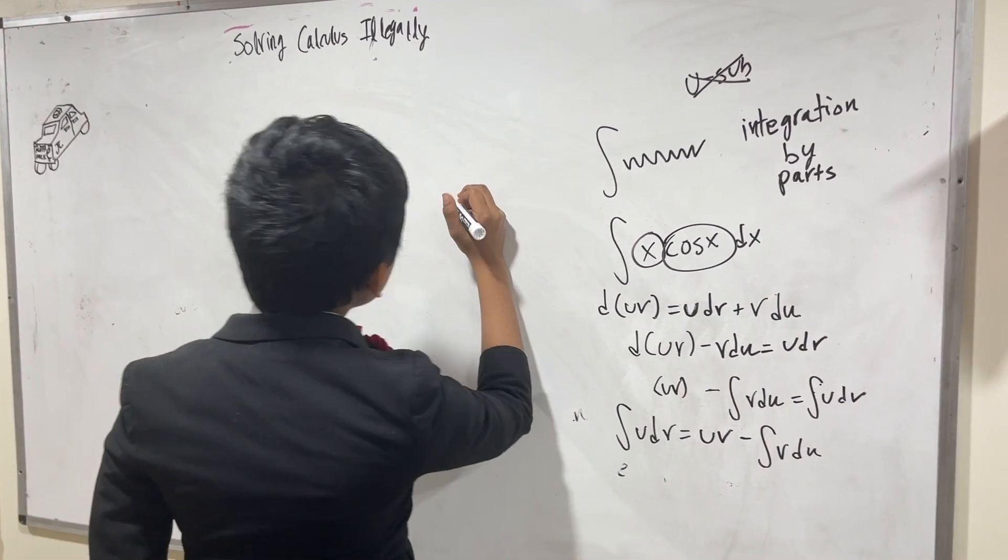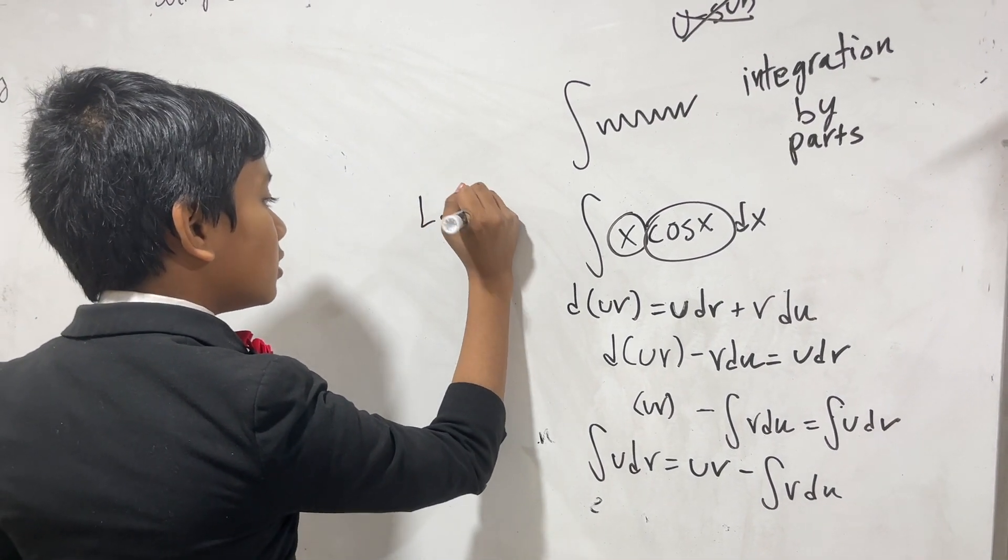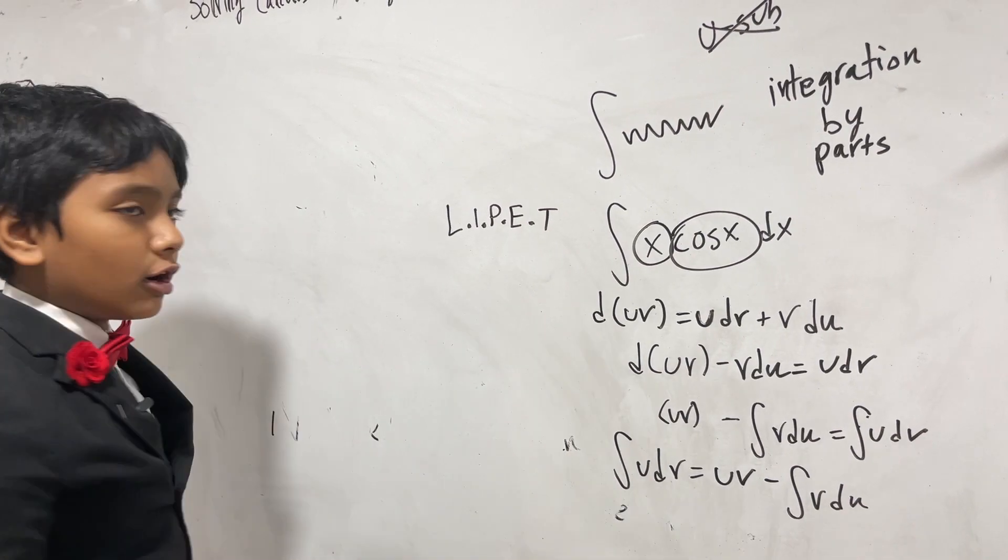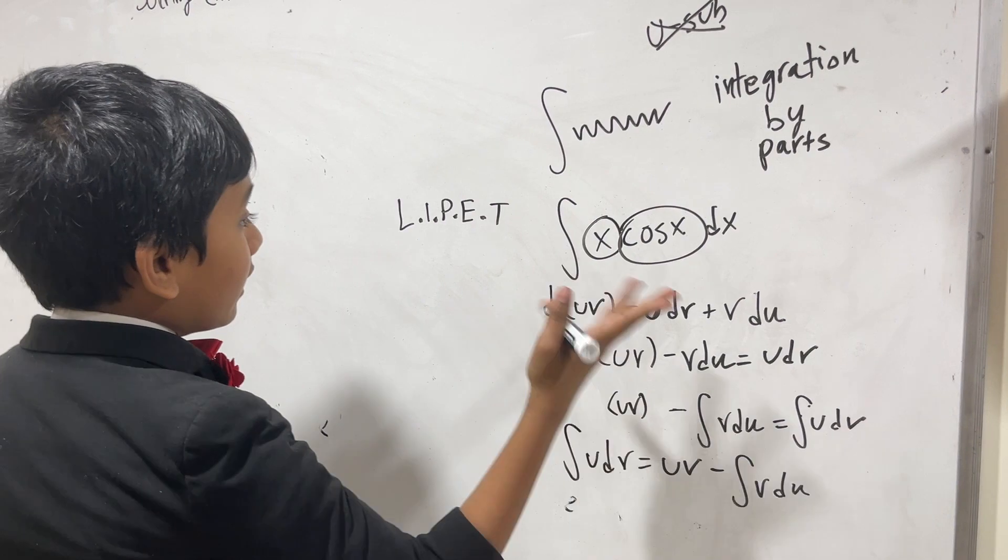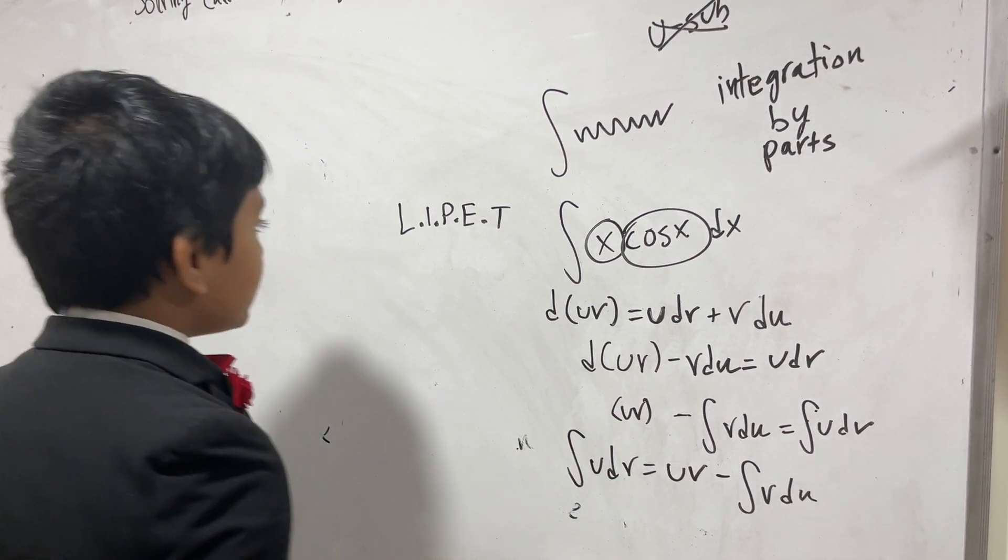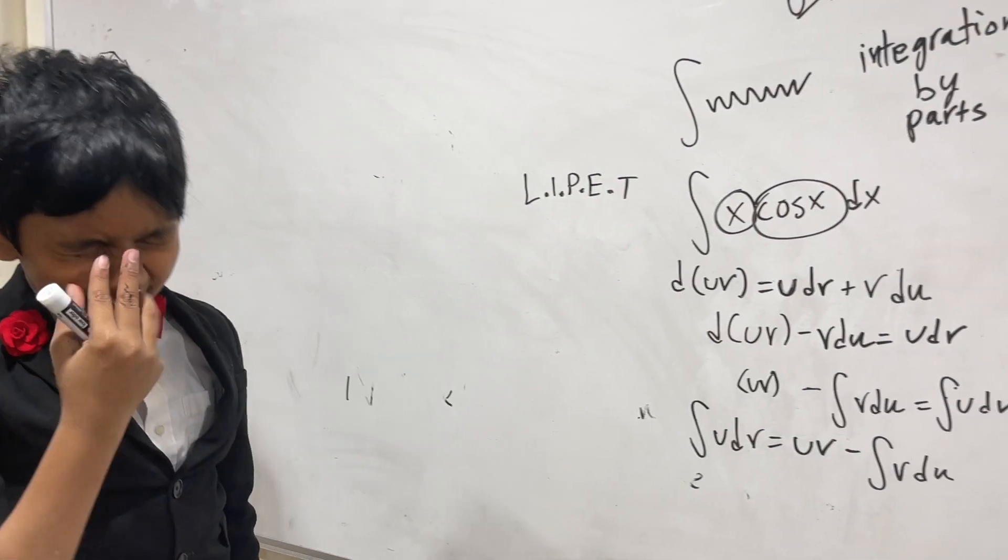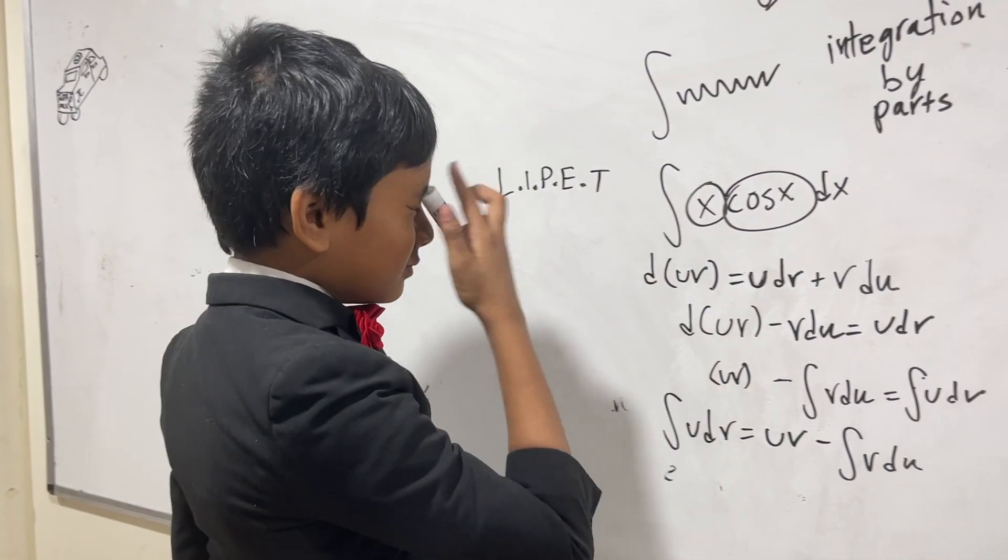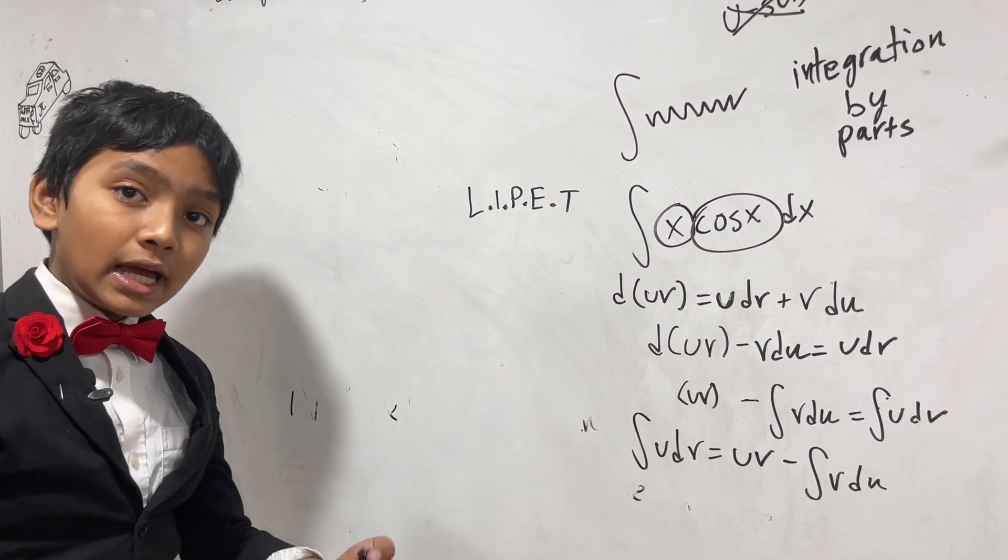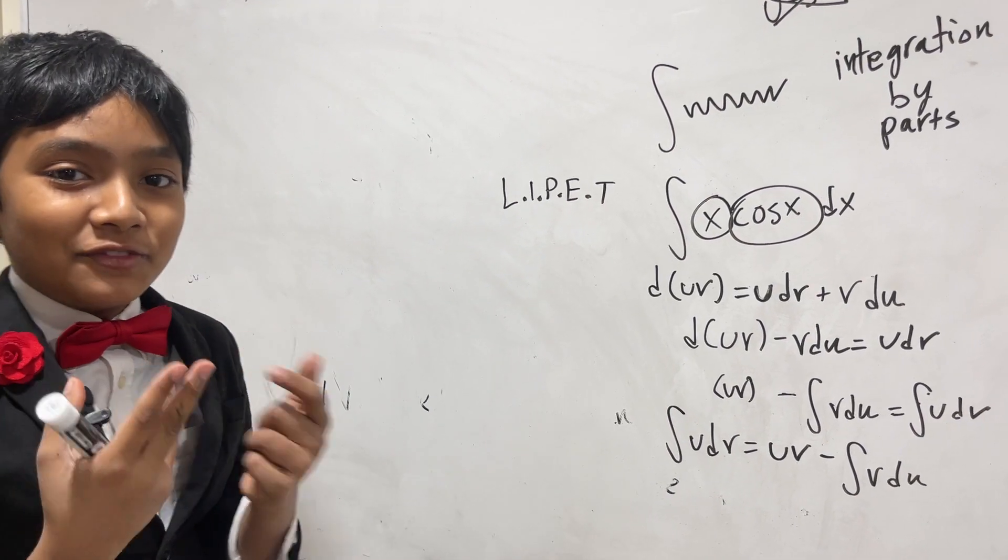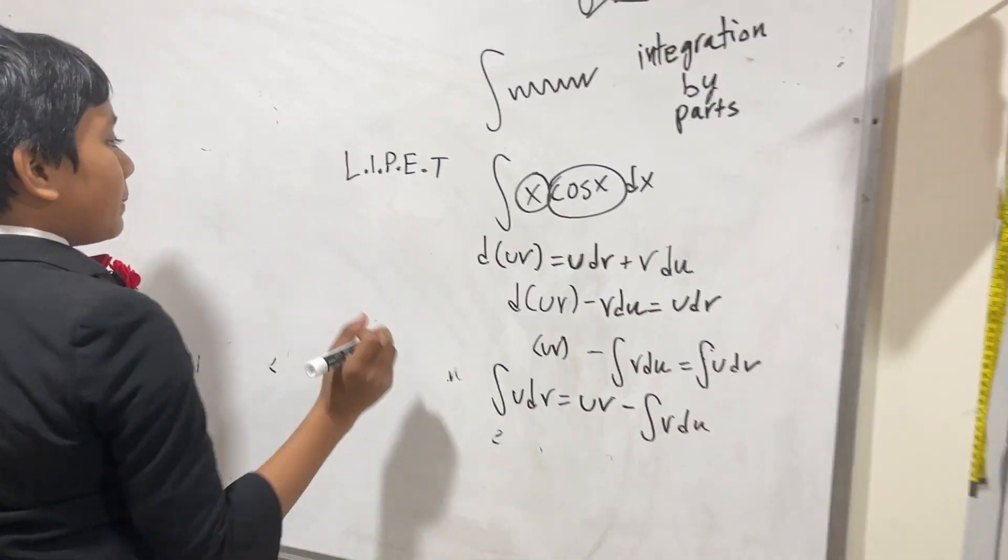There's this little handy thing called LIPET, and it's an acronym for what you should do when integrating by parts. Specifically, it tells you which part of the function that you're integrating should be labeled as u, and which part should be labeled as dv.